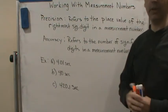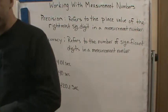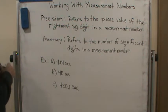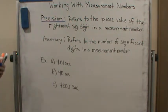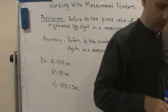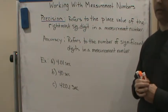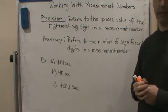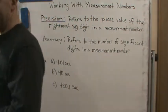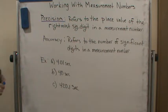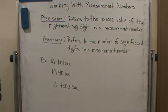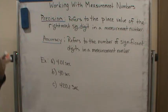Welcome back. Here are the two definitions: Precision refers to the place value of the rightmost significant digit in a measurement number — so it's how many decimal places we are measuring out to. Accuracy is described by counting the number of significant digits in a number. So precision looks at how many decimal places a measurement extends to, while accuracy counts the number of significant digits.